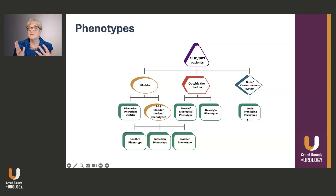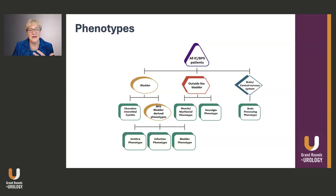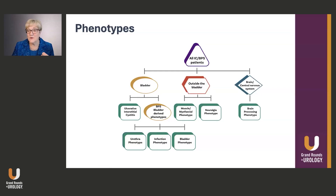There are lots of different ways to break down this group. Based on current research and my own clinical experience, I've broken this down into seven phenotypes, as shown here in green. The first phenotype is ulcerative interstitial cystitis, where you can see Hunner's lesions or Hunner's ulcers by cystoscopy. Dr. Hunter actually defined this phenotype back in 1918.